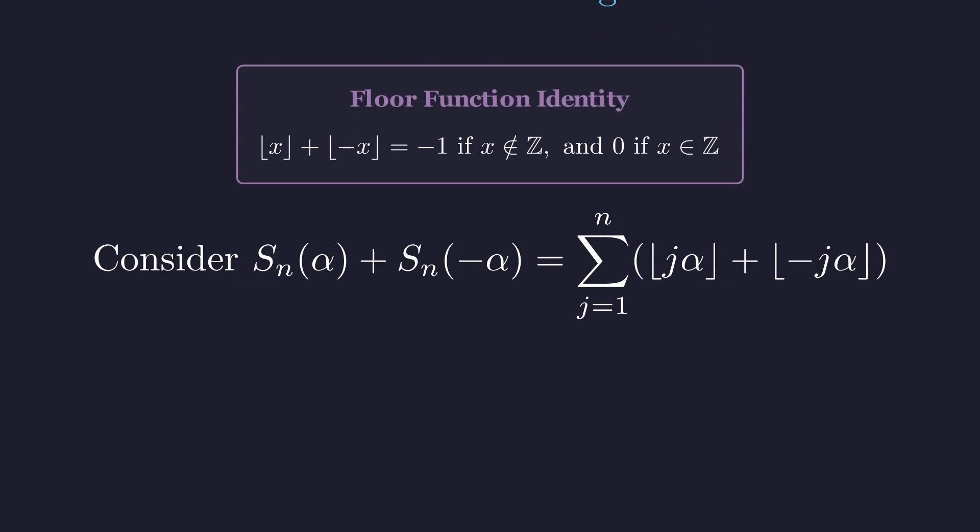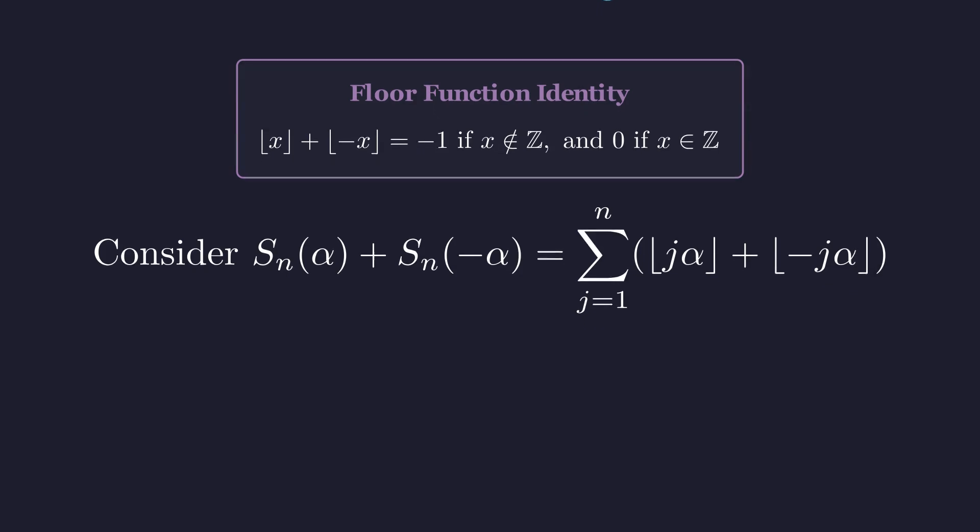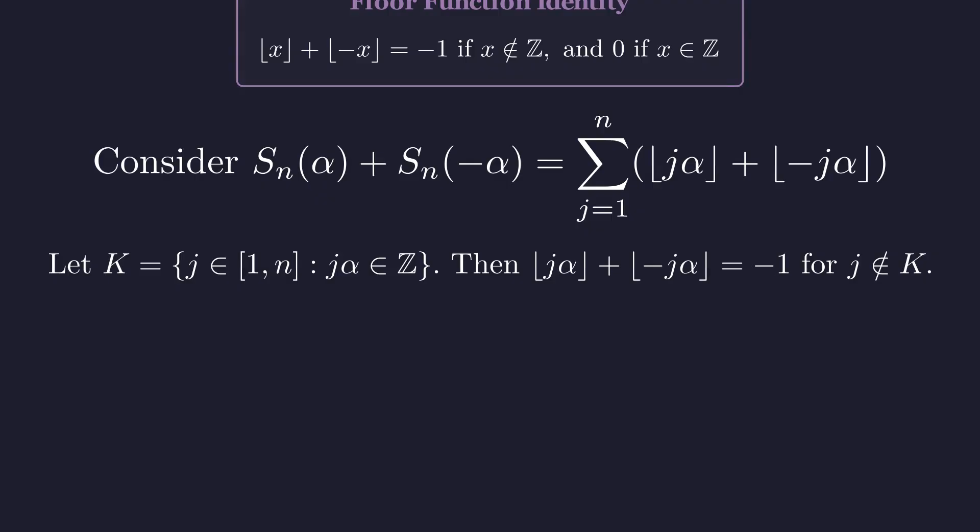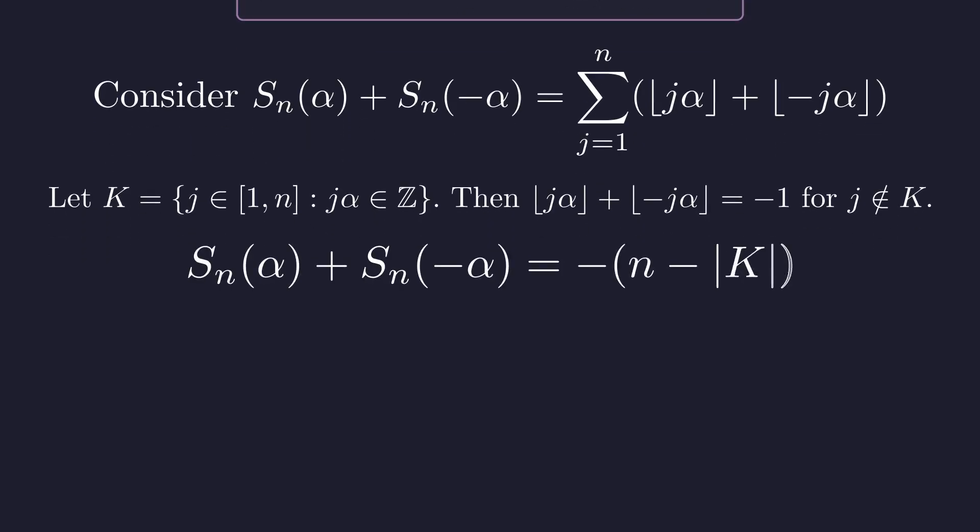Let's apply this identity to the sum of s sub n of alpha and s sub n of negative alpha. Let k be the set of indices j from 1 to n for which j times alpha is an integer. For all indices not in this set k, the term in the sum is negative 1. The sum is therefore the negative of the total number of terms, n minus the size of the set k.